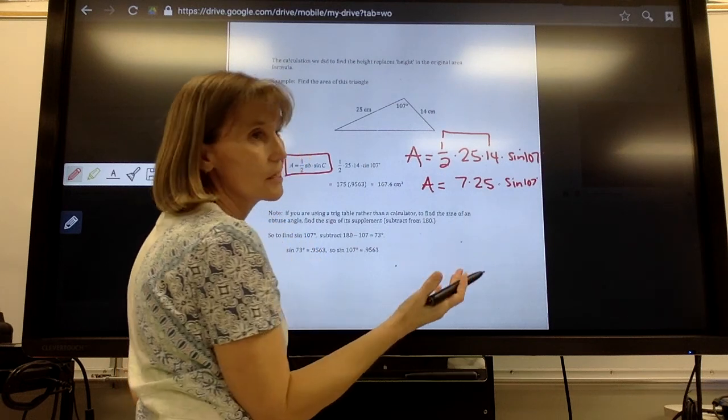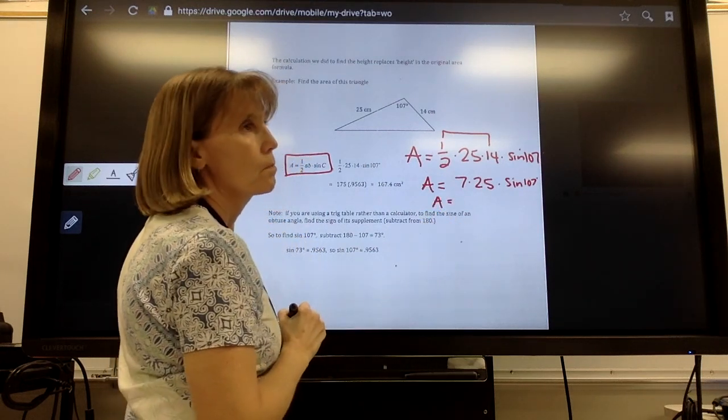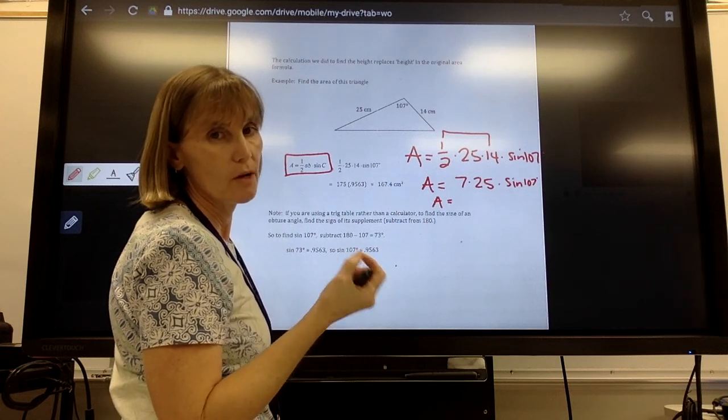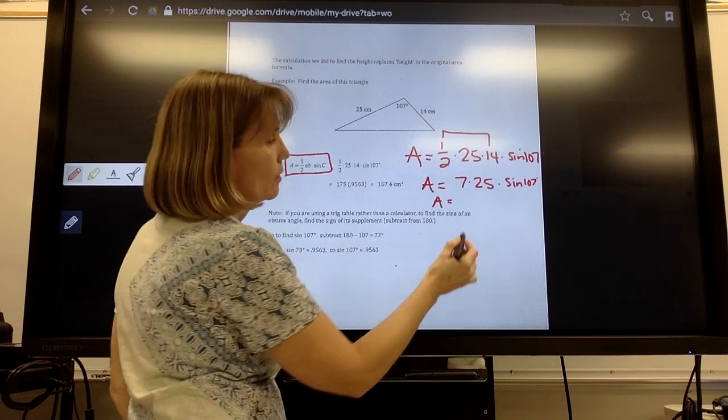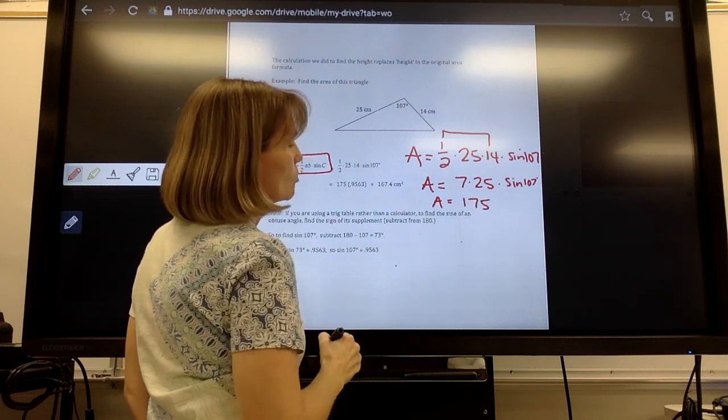7 times 25. If I had 7 quarters, how much would I have? If I gave you 7 quarters, how much money did I just give you? That would be $1.75. So 7 times 25 is 175.